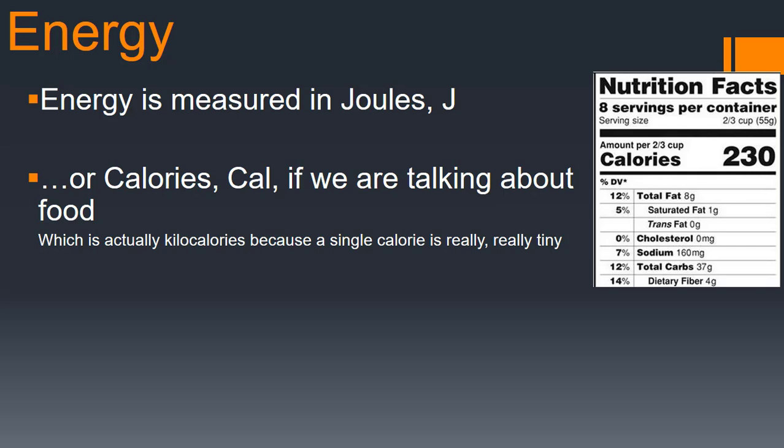It is important to note, however, that the calorie that we see on our food label is actually written with a capital C. This is because it is a kilocalorie, not a single calorie. Remember that kilo means 1,000, so when we eat that giant cookie that has 230 calories on its label, we are actually eating 230,000 calories.